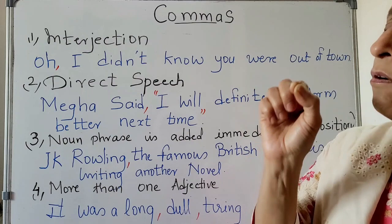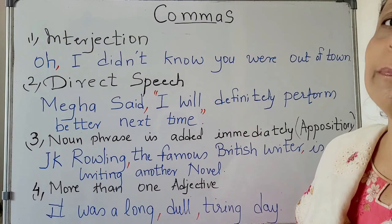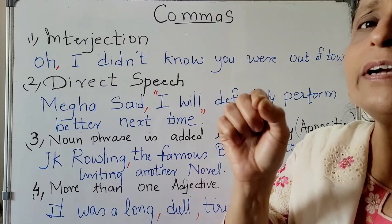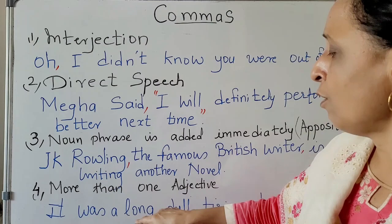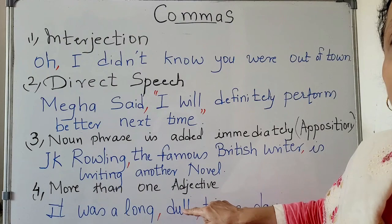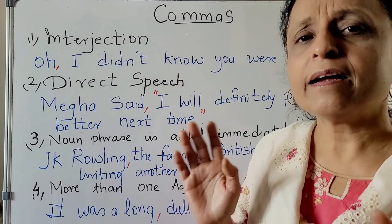When many adjectives are given to describe someone — maybe he is very smart, sharp, intelligent — so: smart, sharp, intelligent, and you can go on for many more qualities. When someone is described by many adjectives, every time you put a comma. For example: it was a long, dull, tiring day — the adjectives long, dull, tiring each get a comma.